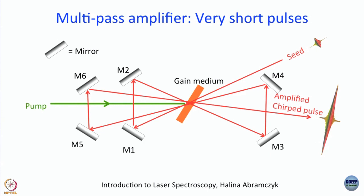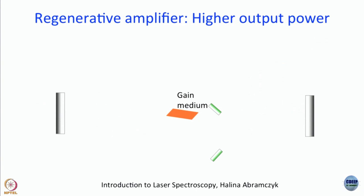Now let us come to the design we have in our lab — it is called a regenerative amplifier, which has higher output power. The difference between a multipass amplifier and a regenerative amplifier is that in a regenerative amplifier, the gain medium is actually inside a cavity, so it is a laser by itself.